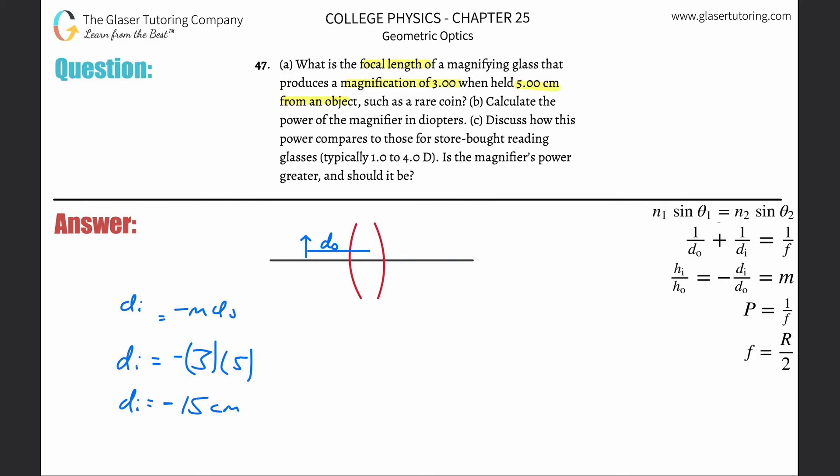Negative 15 centimeters. So what this means, the negative sign here, is going to tell us that the image is now on the same side as the object. That's the whole point of a magnifying glass. You might have seen a problem similar to this before.